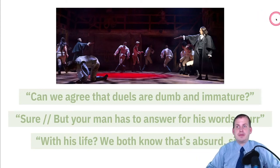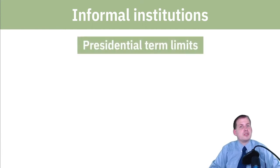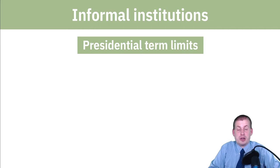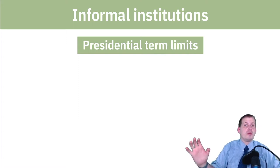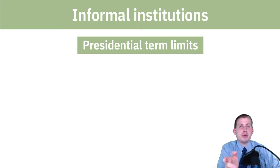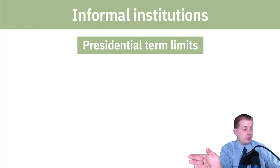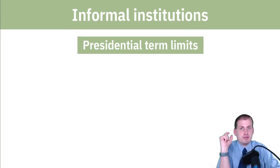Informal institutions shape all sorts of policy even if they're not written down. Presidential term limits are a fascinating example — it was not a constitutional amendment or part of the constitution up until 1944 that you should only run for president for two terms. That was an informal norm from the time of George Washington until FDR violated it, running for a third term, then a fourth, and dying in the middle of the fourth. As a result, the 22nd Amendment was ratified in early 1950 as a formal fix.